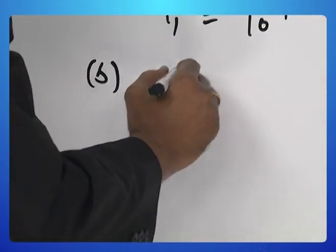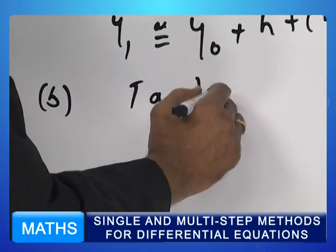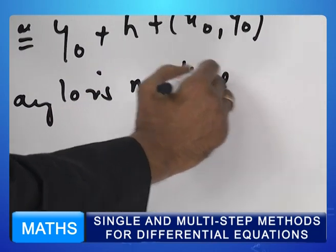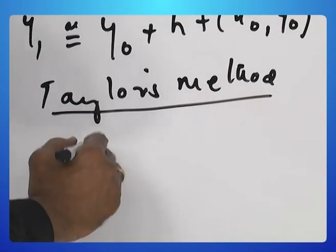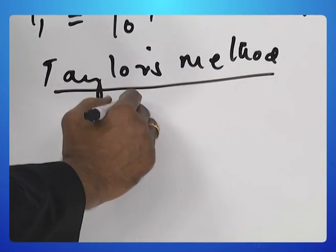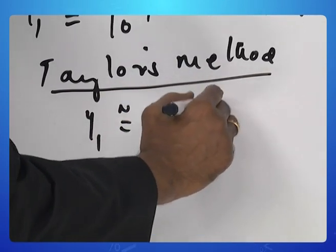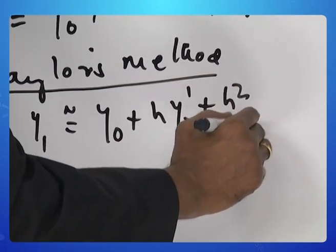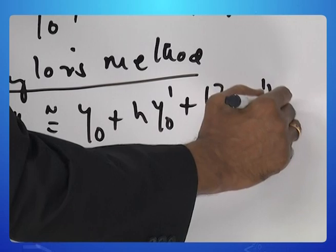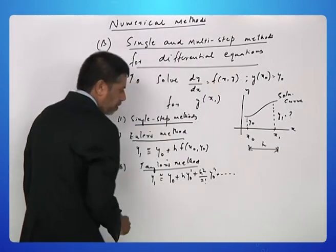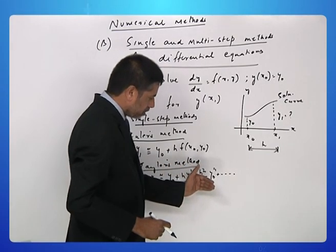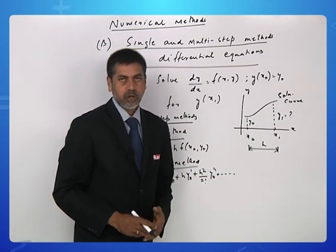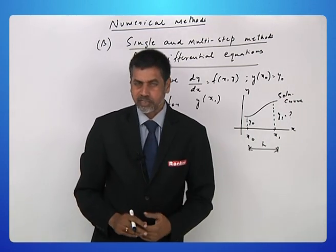Then we have Taylor's method, which gives y1 as y naught plus h y naught dash plus h square by 2 factorial y naught double dash and so on. The number of terms that is to be taken in the Taylor series will depend upon the accuracy to which you are estimating y1. Let us go to the next single step method.